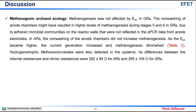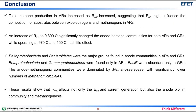Conclusion: Total methane production in acetate-fed reactors increased as external resistance increased, suggesting that anode potential might influence the competition for substrates between exo-electrogens and methanogens in acetate-fed reactors. An increase of external resistance to 9,800 ohms significantly changed the anode bacterial communities for both acetate-fed and glucose-fed reactors, while operating at 970 ohms and 150 ohms had little effect.